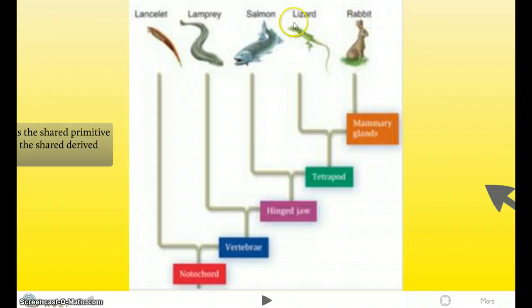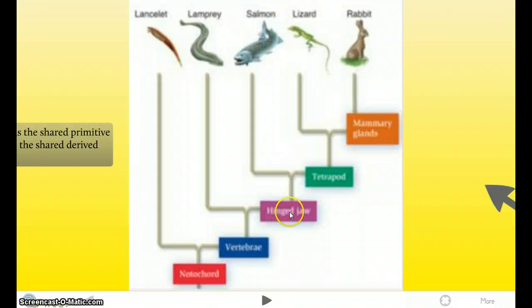Well, so we have the Salmon, Lizard, and Rabbit as the In-Group. They are the In-Group because they share the same Derived Character, which is the Hinge-Jaw. So the Lamprey would be the Out-Group because it does not have a Hinge-Jaw that all three In-Group Species have. That's the Out-Group and why. It's because the Lamprey does not have the Hinge-Jaw.